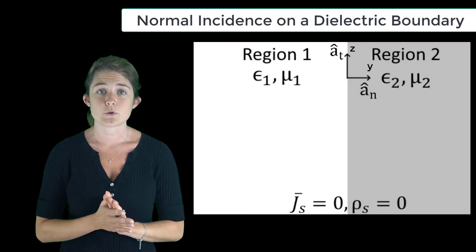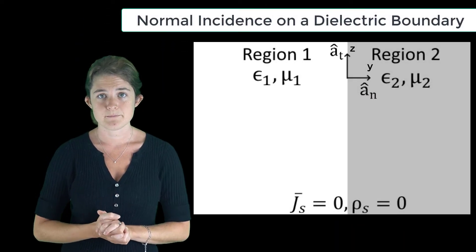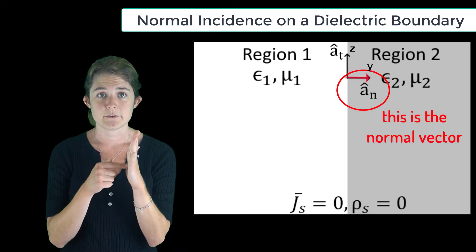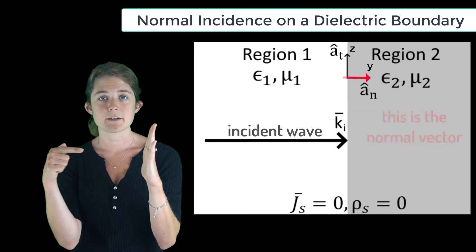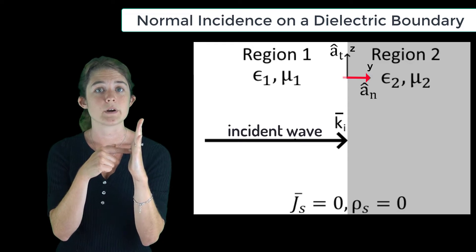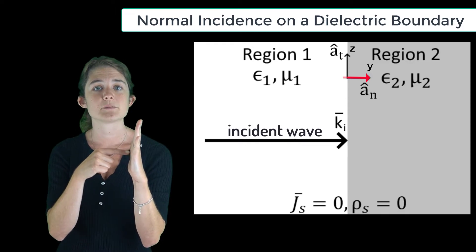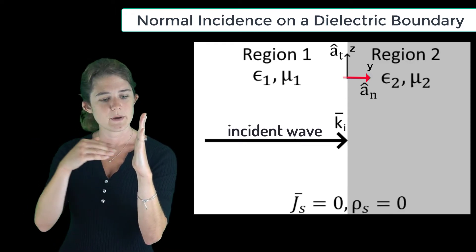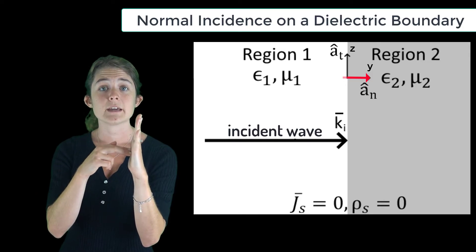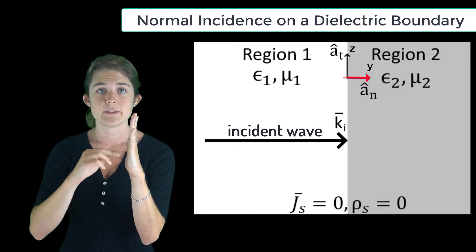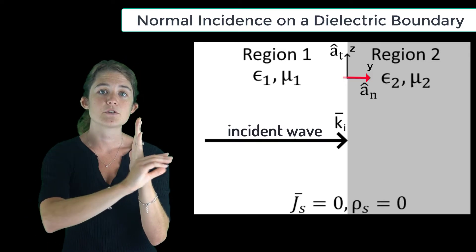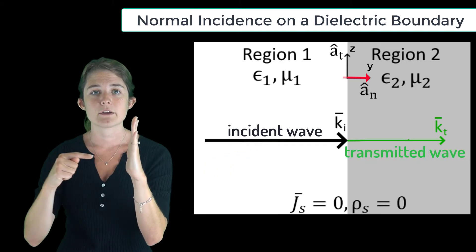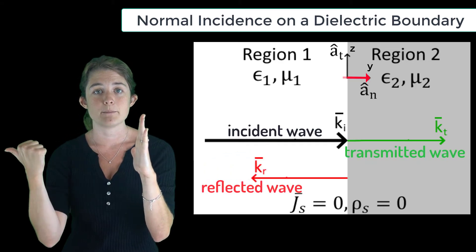First, let's look at the case of normal incidence. The normal vector to the plane of the boundary is parallel to the K vector of the incident wave — in other words, the wave is propagating straight toward the boundary. When the wave hits the boundary, the energy can either pass through into the second medium and keep traveling, or reflect off the boundary and propagate backward into the first medium.